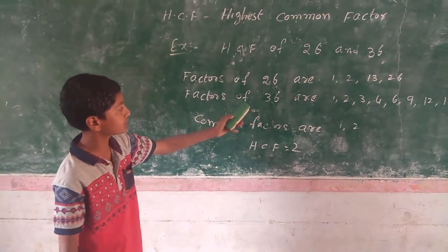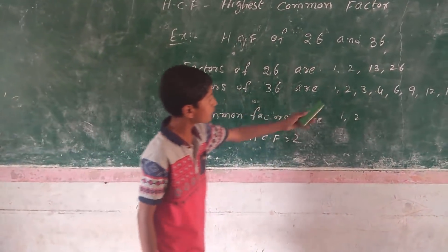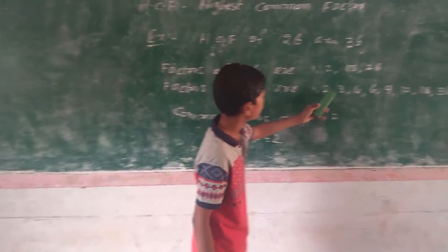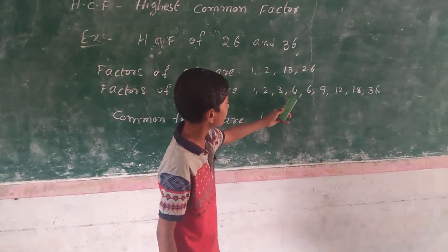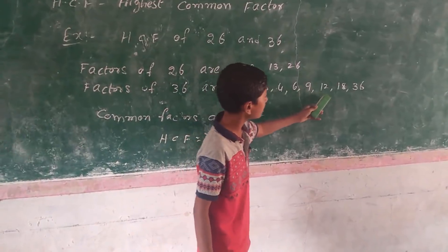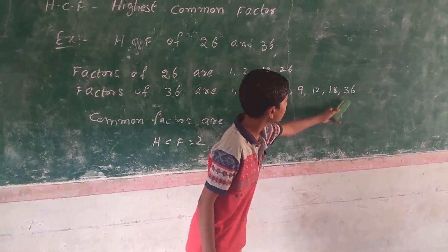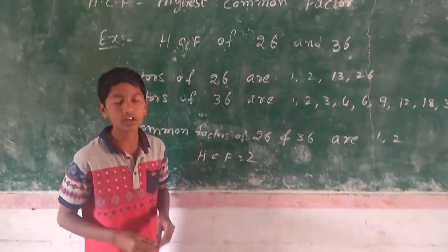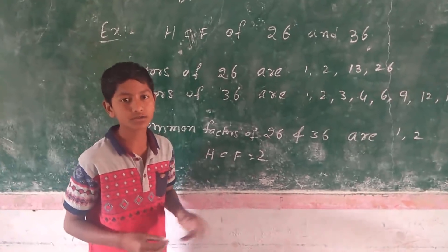Factors of 36 are 1, 2, 3, 4, 6, 9, 12, 18, 36. The first step is over.